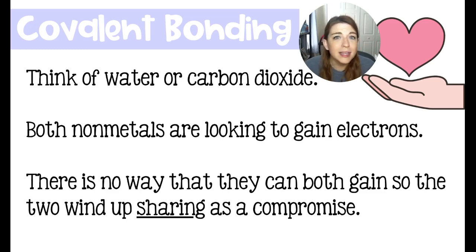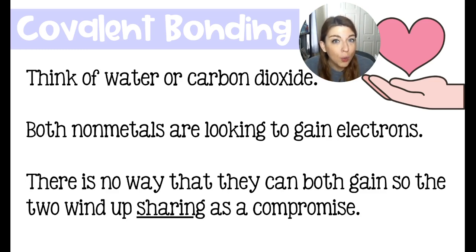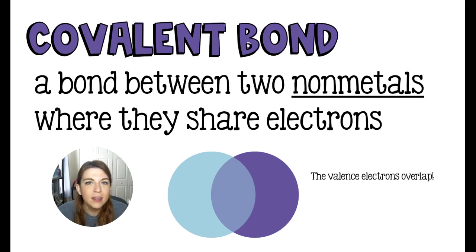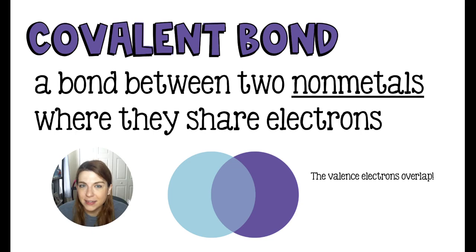Because they can't both gain electrons, they actually compromise by sharing their electrons — hence the prefix co-. A covalent bond is when two nonmetals are going to share their electrons. Their valence orbitals are going to overlap. They are covalent.